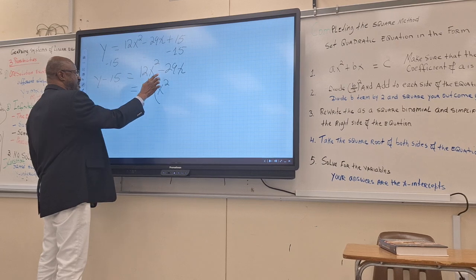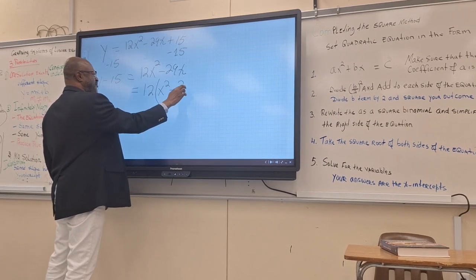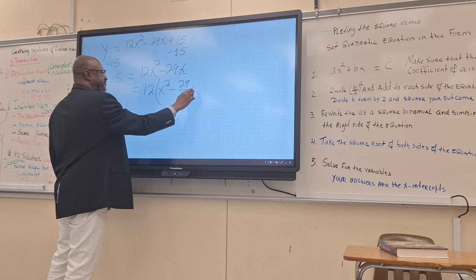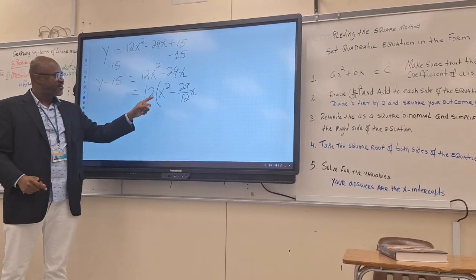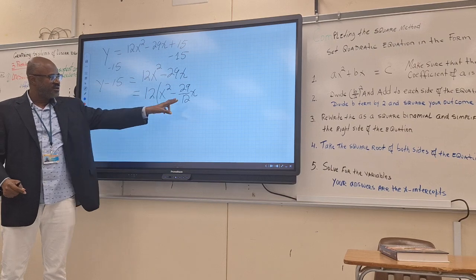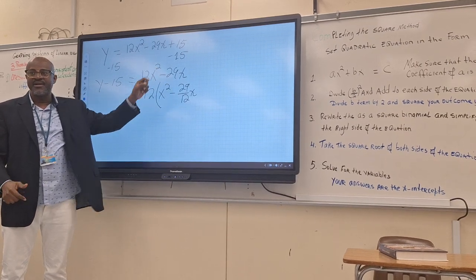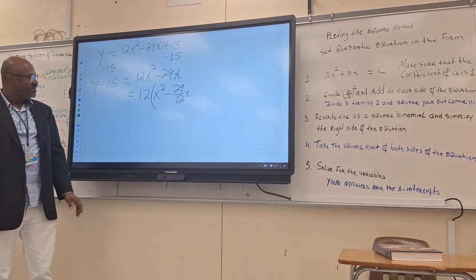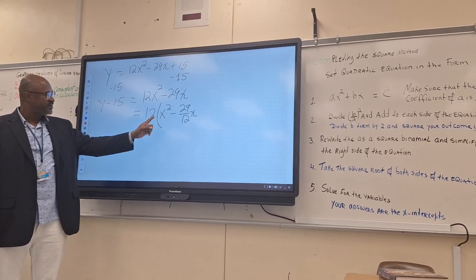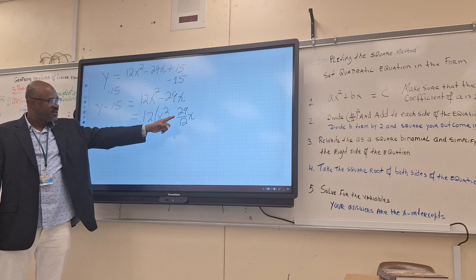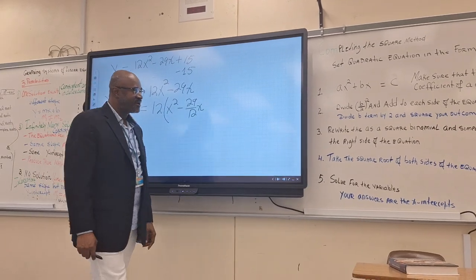The only way you can get that is to have 29 over 12. So when you do the distributive property, you can end up with 12x squared and the 12 will cancel each other. Now a is 1, or we factor the a out. This is your new b. Then we can start using the complete the square method.